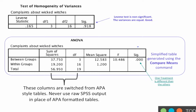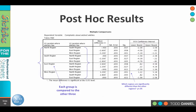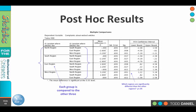In this case the p-value is .000. Do you remember how we write up a .000? It's going to be written as less than .001. What that tells us is that there is a statistically significant difference.